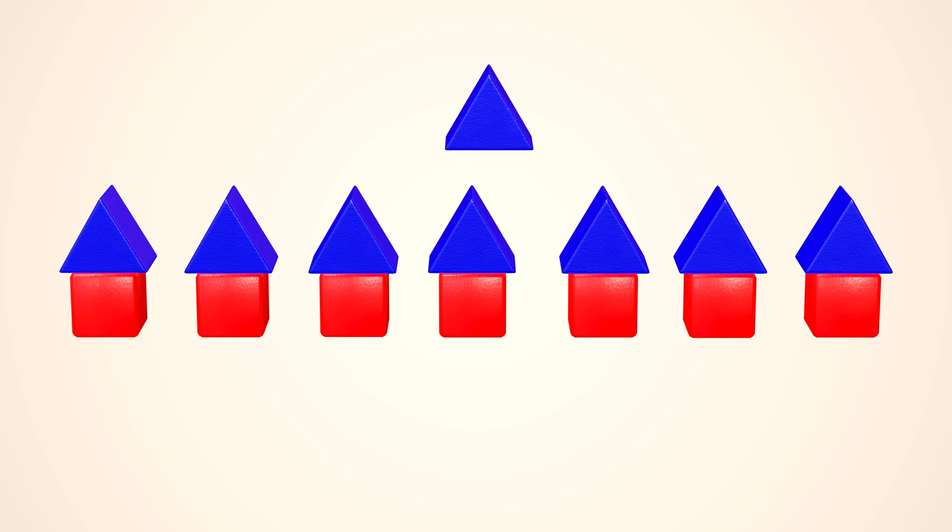Look, there is a blue triangle that doesn't have a pair with a red cube, because there are more blue triangles. So, there are more blue triangles than red cubes.